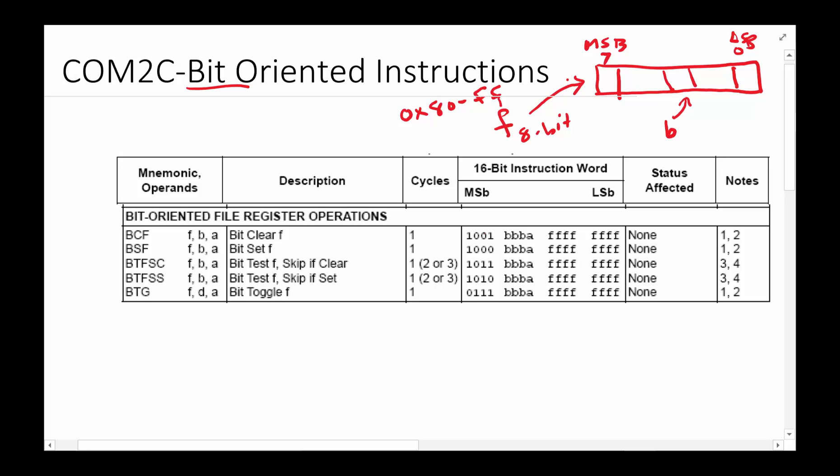Which bit we want to change is specified with B. If you look at the typical instruction down here, these are all the instructions that manipulate bits: the clear bit, the set bit, the test to see if the bit is clear and do certain things, test the bit to see if it's set and skip if it's set, and toggle the bit. The first four most significant bits identify which instruction.